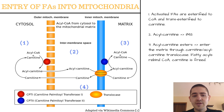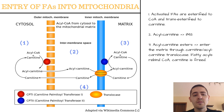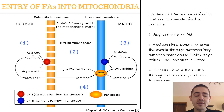In the matrix, the fatty acyl group transfers from carnitine to coenzyme A (CoA). The enzyme that facilitates this reaction is carnitine acyltransferase-2, also known as carnitine palmitoyltransferase-2 (CPT-2). Carnitine is then released and can diffuse back across the membrane via the same transporter — carnitine acyl carnitine translocase — and the entire process can be repeated.